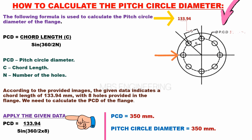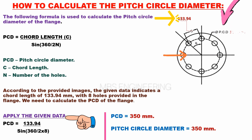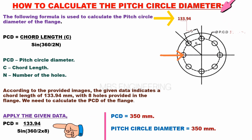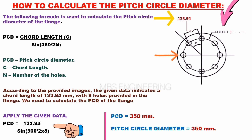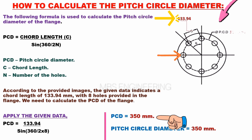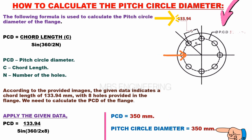We will get the pitch circle diameter PCD by applying the given data in the above equation. PCD equals 133.94 divided by the sine of 360 divided by 2 into 8. Therefore, the obtained PCD or pitch circle diameter is 350 mm.